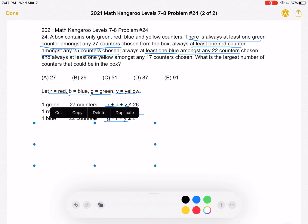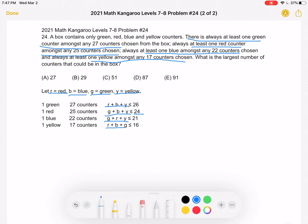And then finally, we have one yellow among any 17 counters chosen. So one yellow, 17 counters, red plus blue plus green must be less than or equal to 16.